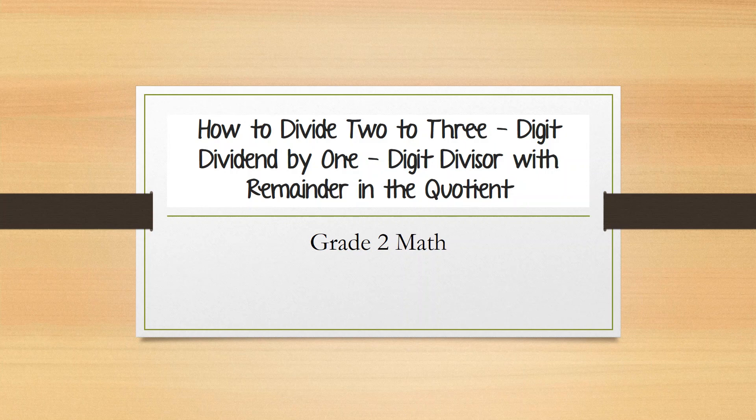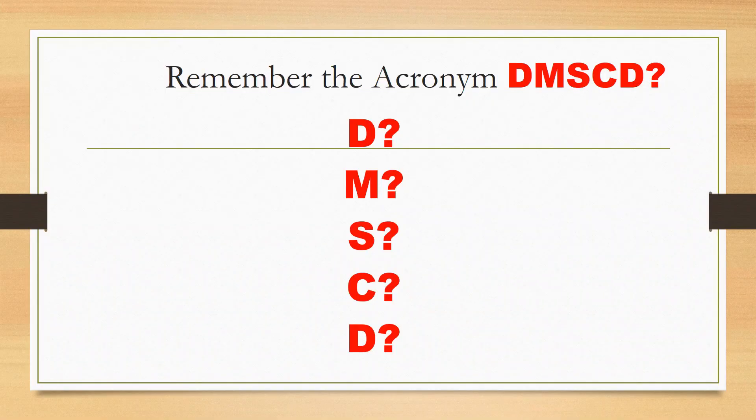How to divide 2 to 3-digit dividend by 1-digit divisor with remainder in the quotient. Do you still remember the acronym DMSCD? What do we mean by DMSCD?